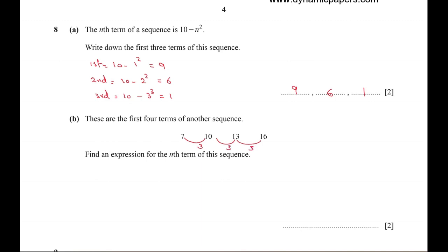So it's an arithmetic sequence. The rule of the arithmetic sequence is dn plus a minus d, where a is the first term and d is the common difference.